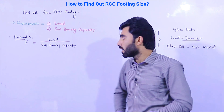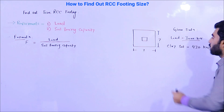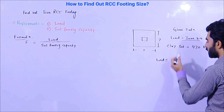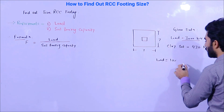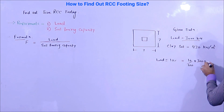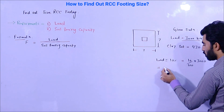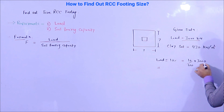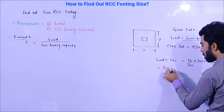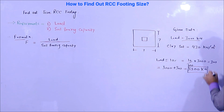The load is 3,000 kilonewtons. Now I will increase the load by 10% as a factor of safety — because in the future there may be additional loads on the column. So: 10/100 × 3,000 = 300. Therefore the total load becomes 3,000 + 300 = 3,300 kilonewtons.